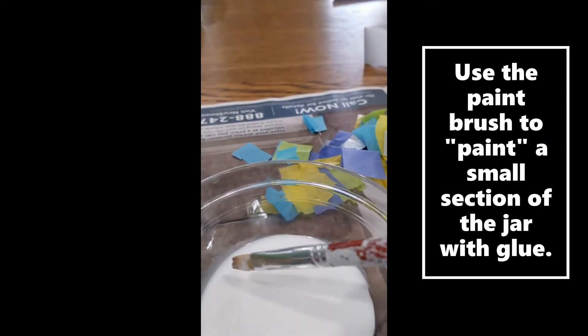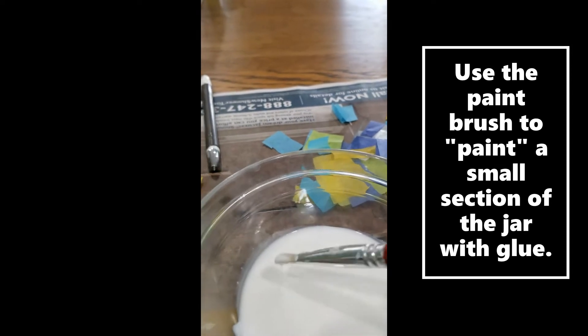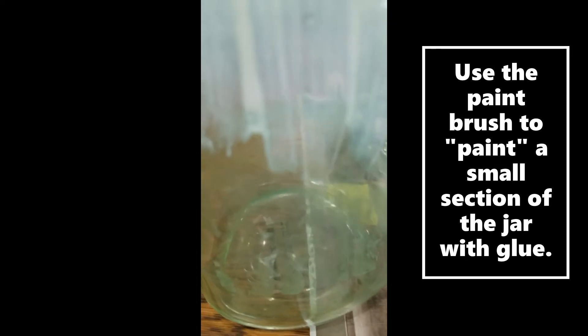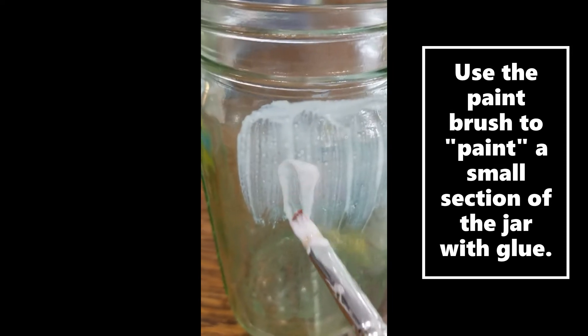What we're going to do next is we're going to take our paintbrush and we're going to dip it into the glue and we're going to literally paint the glue on the side of the jar.